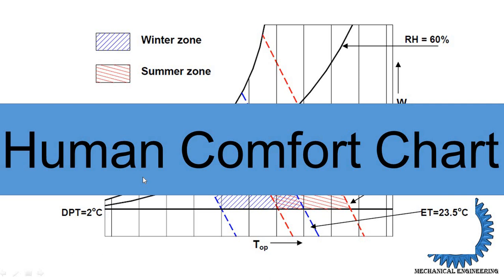It is a certain condition of the mind in human beings, feeling comfortable at different temperatures. Every person does not feel comfortable at the same temperature. For example, at 16 degrees centigrade some people feel comfortable while others need to wear jackets. Similarly, at 39 or 40 degrees in summer, some people feel comfortable while others feel too warm and need air conditioning.